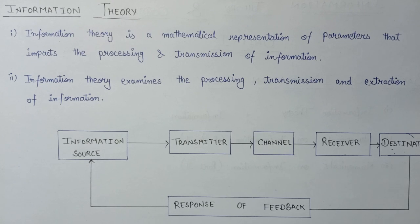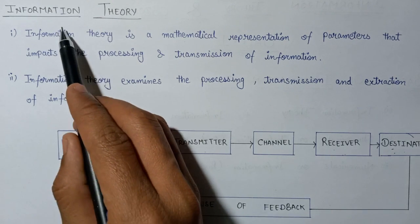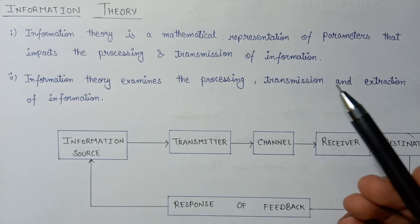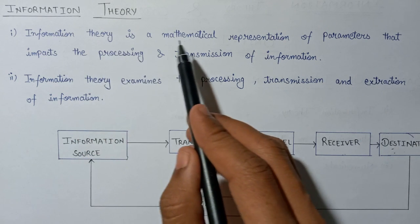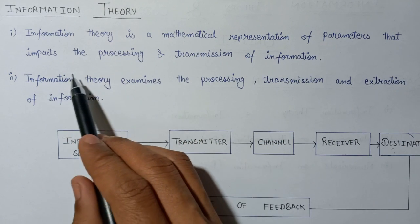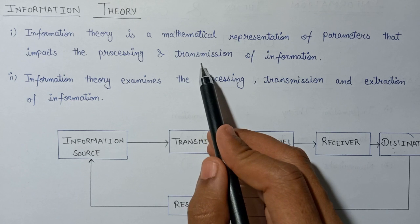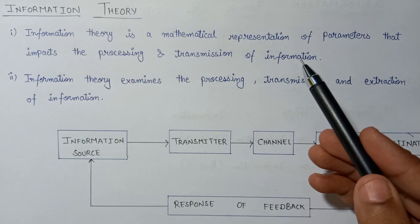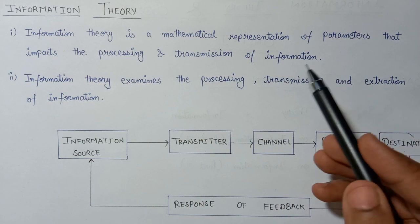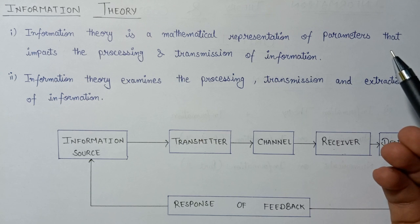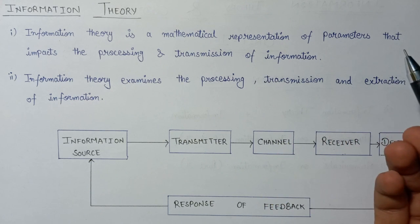In this lecture we are going to study about information theory. Information theory is a mathematical representation of the parameters that impact the processing as well as the transmission of information. Information theory basically refers to how information is being transmitted by the help of a channel from the source towards the destination.